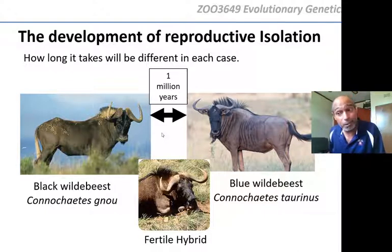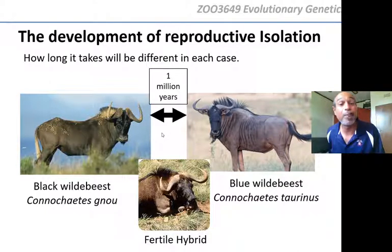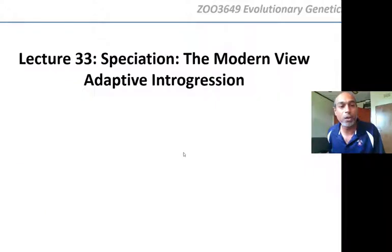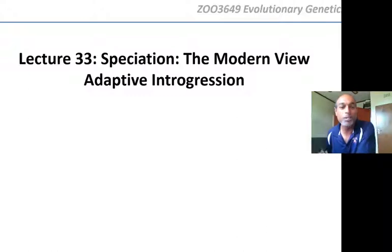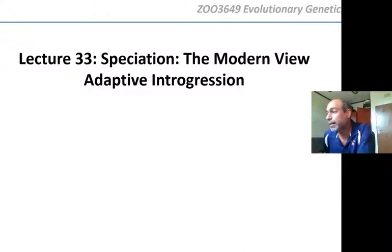A million years was not enough in the case of the wildebeest to develop reproductive isolation, whereas in other cases a million years is enough. That leads us to our modern view of speciation, which we'll be talking about in the next lecture.